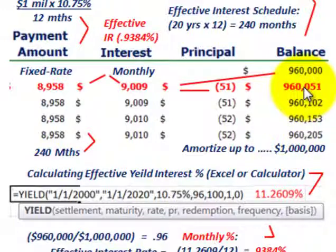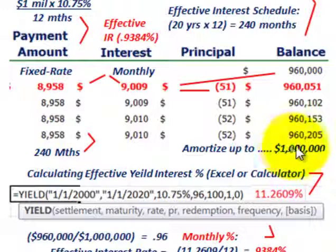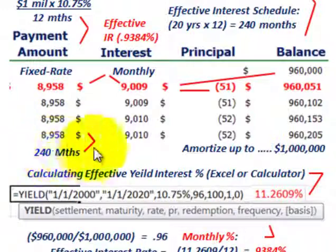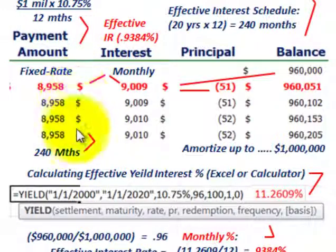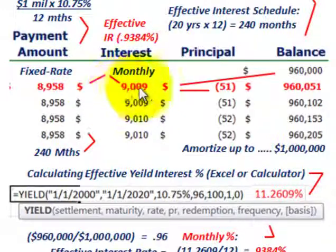You must go through all 240 payments and amortize this note up to $1 million — that's its maturity value. I'm only showing four periods here, but you'd amortize it in this fashion for all 240 months. If adjustments are needed at one or three years for variable mortgage rates, you'd adjust your amortization schedule accordingly. So we've calculated our effective interest and fixed interest on a monthly basis and amortized from $960,000 up to $1 million.